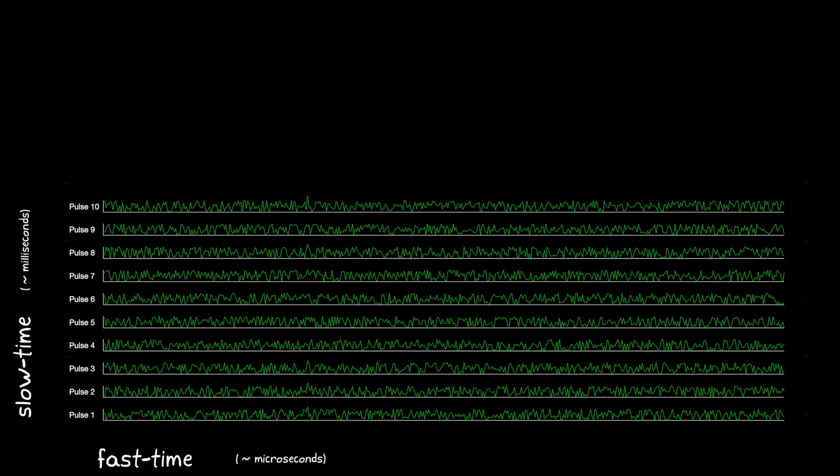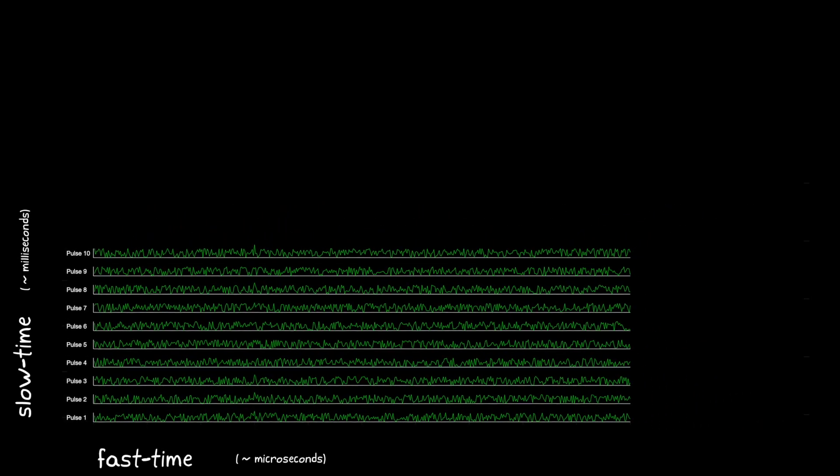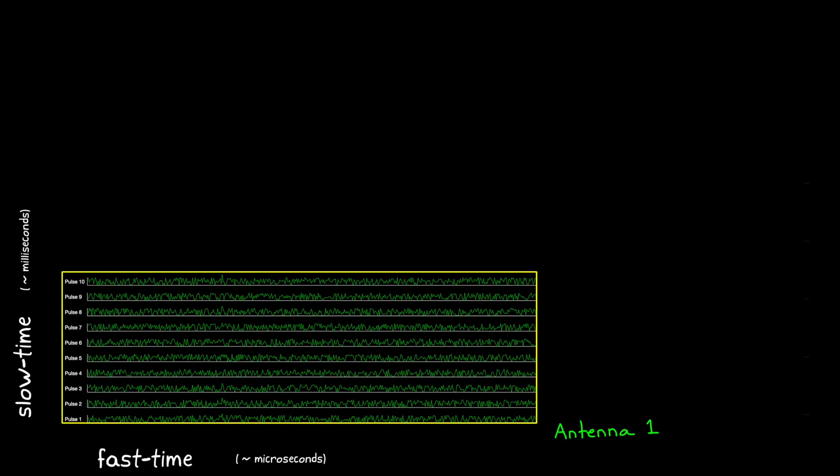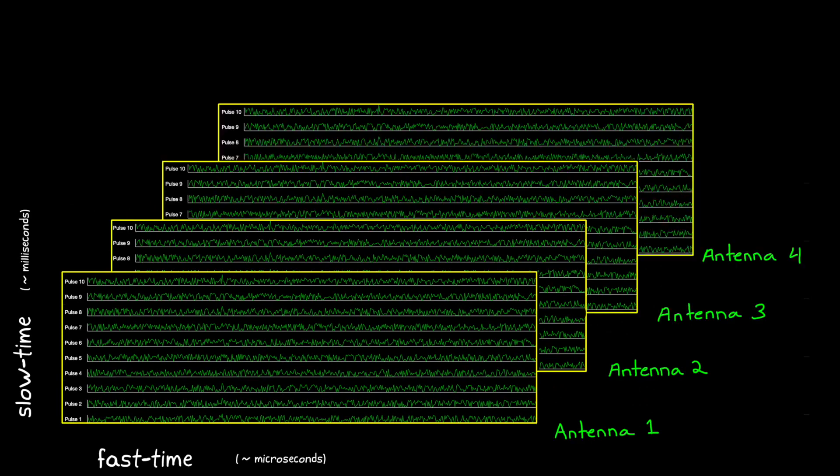Now, if you recall from the second video in this series, we talked about how multiple receive antennas could be used to determine the direction to an object. And we can do the exact same thing with pulsed radar and have multiple receive antennas, each receiving and recording multiple pulses over time.